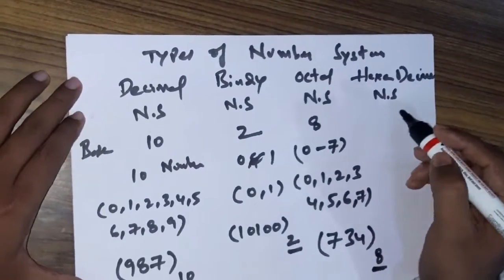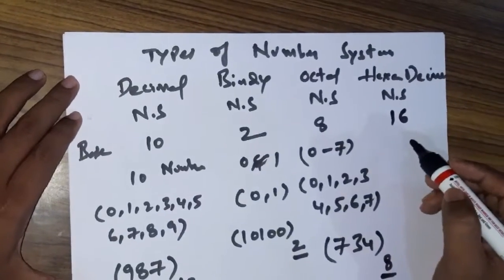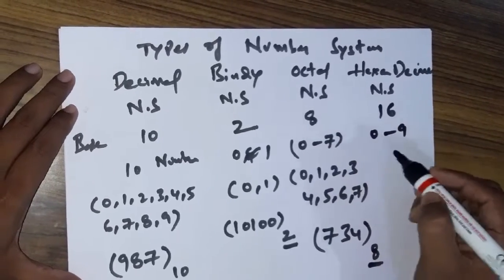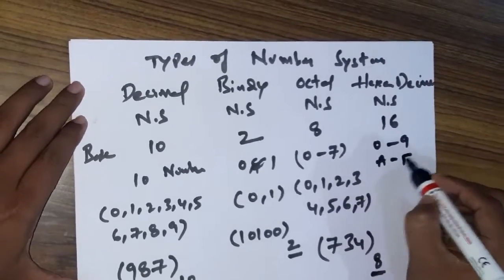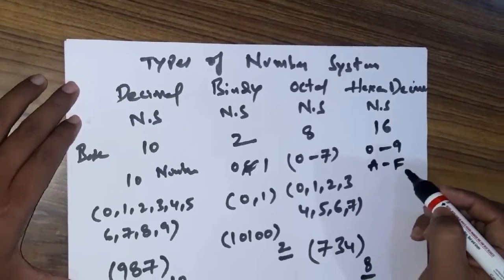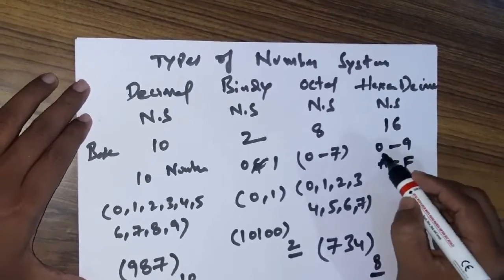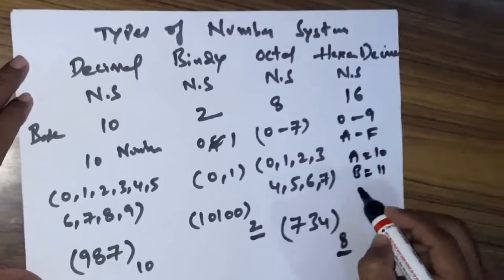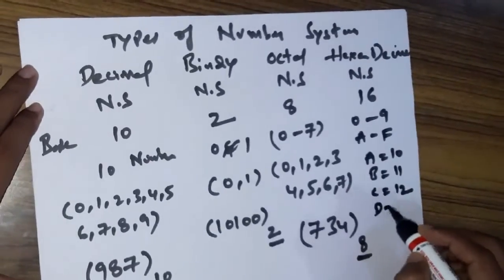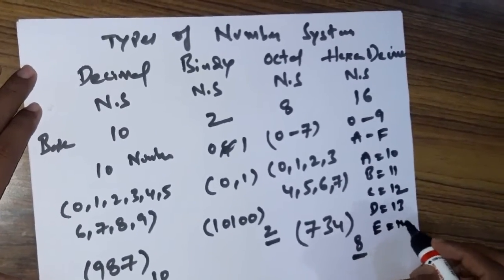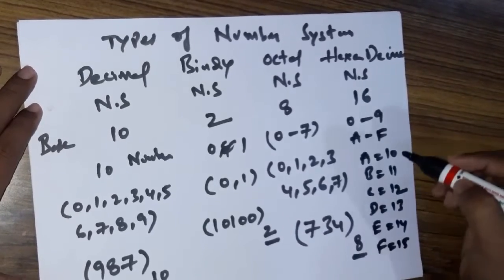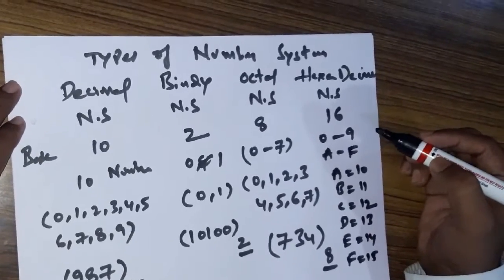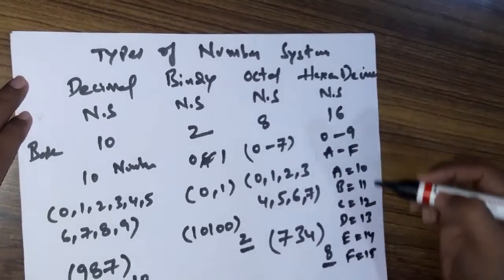The last one is the hexadecimal number system. The base of the hexadecimal number system is 16, meaning we have 16 numbers in it: digits 0 to 9, and then letters A to F. A equals 10, B equals 11, C equals 12, D equals 13, E equals 14, F equals 15. These 6 letters plus 10 digits give us totally 16 numbers to represent any number.